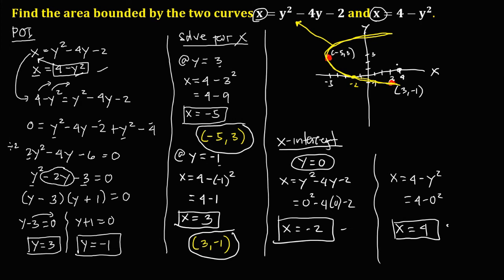The second curve has x-intercept at positive 4, and since it opens to the left, its equation is x equals 4 minus y squared. Since the curves open left and right, we're going to use the x-axis orientation and integrate with respect to y to solve for the area.